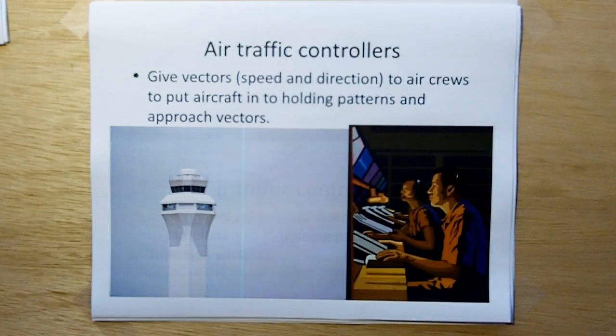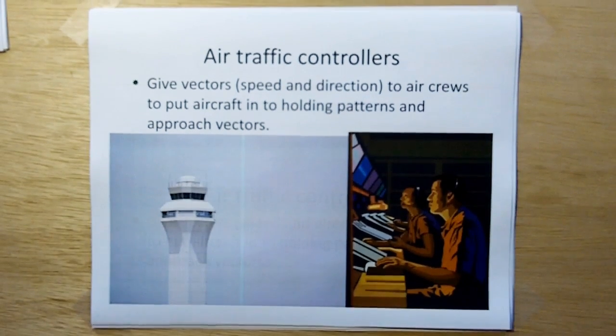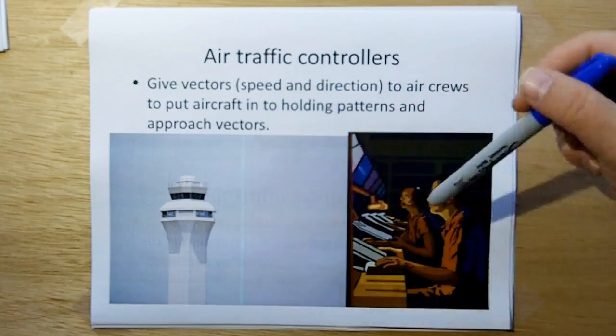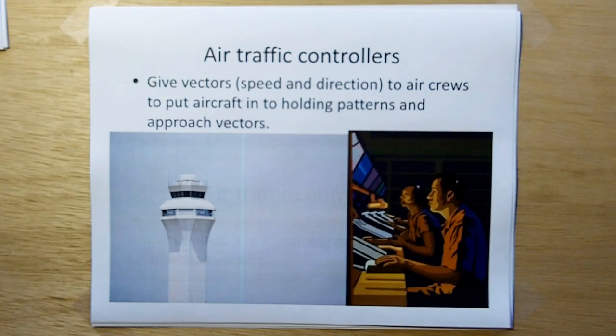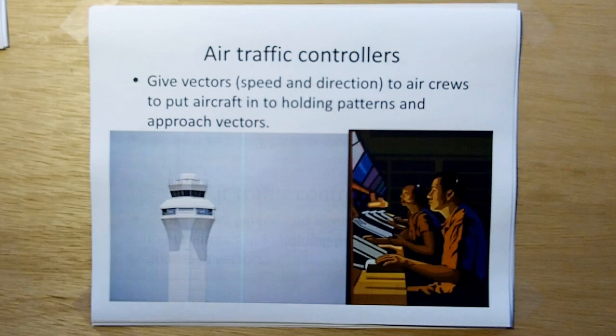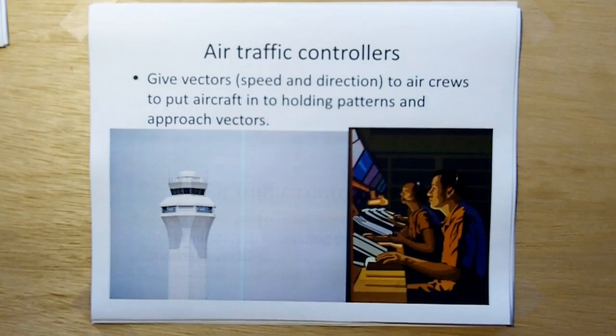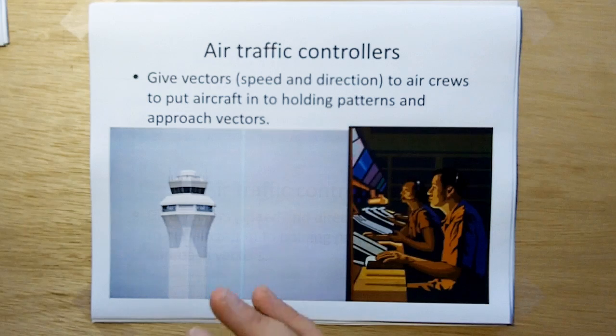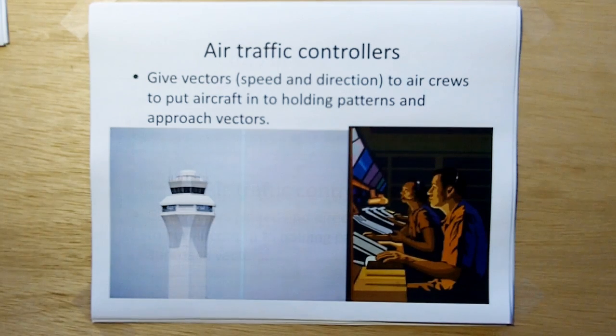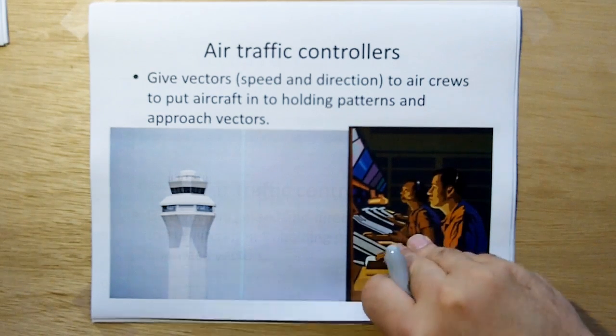Air traffic controllers, I'm sure you've heard the term that we need to vector that aircraft in. Well, that's what they do. On their radar, they call the airplane over their radio and say, you know, American flight such and such, please take a heading of so many degrees and speed of 200 knots or whatever. So they basically give vectors to vector in an aircraft for landing or to put an aircraft into a holding pattern.